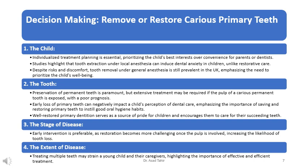The extent of disease: treating multiple teeth may strain a child and their caregivers, highlighting the importance of effective and efficient treatment. Despite a decrease in caries prevalence among children over the past two decades, the dental profession struggles to provide effective restorative care, evident in decreasing care indices. Conclusion: decisions regarding the removal or restoration of carious primary teeth should prioritize the child's well-being, aim to preserve permanent teeth, intervene early, and efficiently manage the extent of disease.